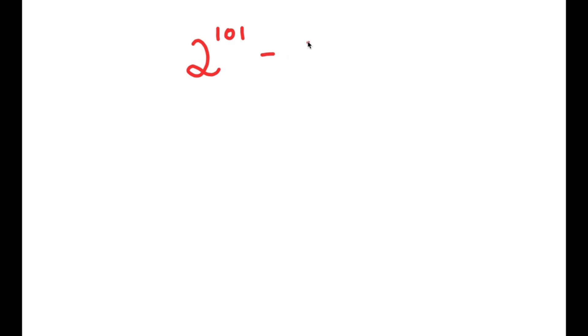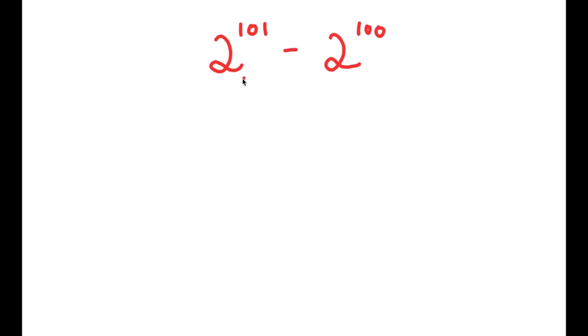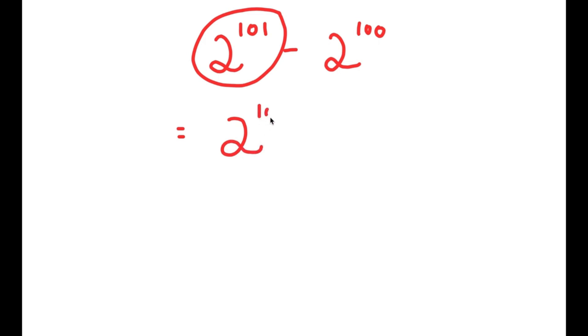All right, so in this next problem I'm going to be solving 2 to the power of 101 minus 2 to the power of 100. To solve this problem, I'm going to first start by rewriting 2 to the power of 101 as 2 to the power of (100 + 1).